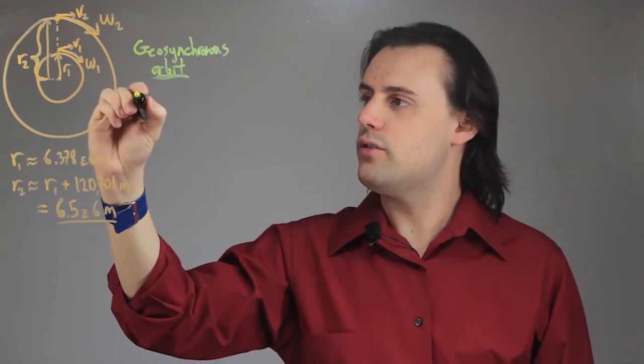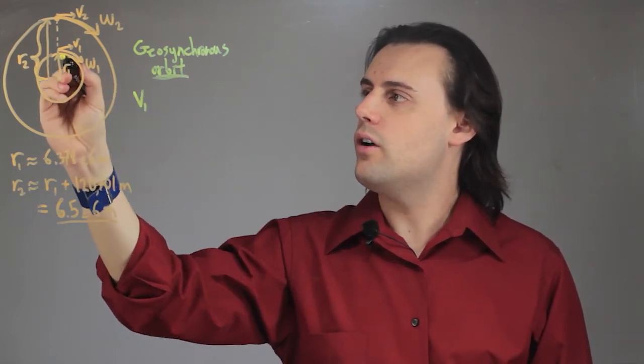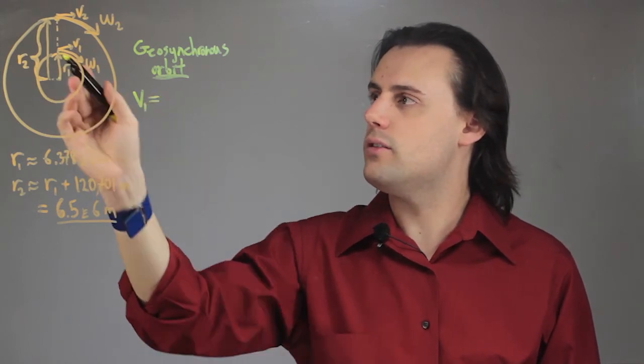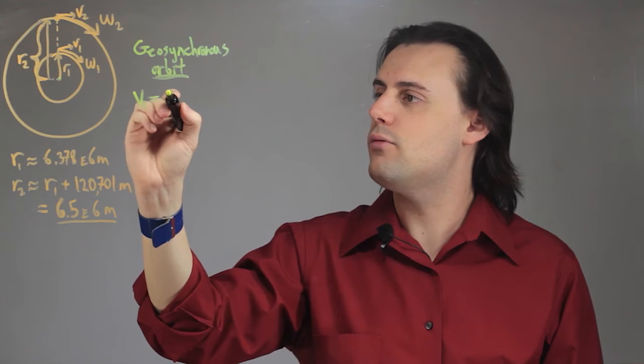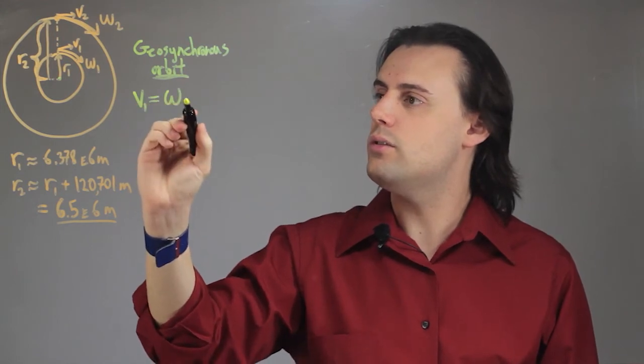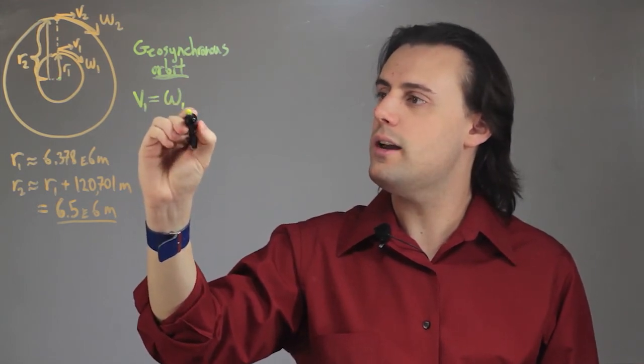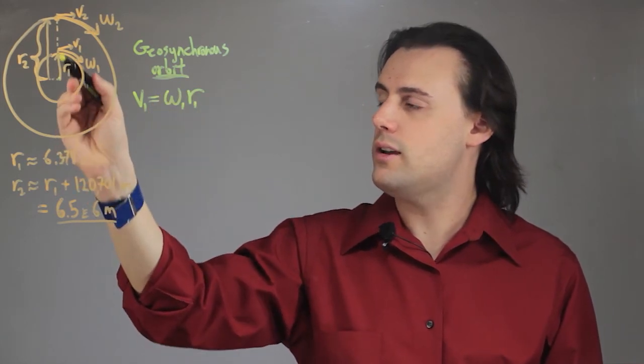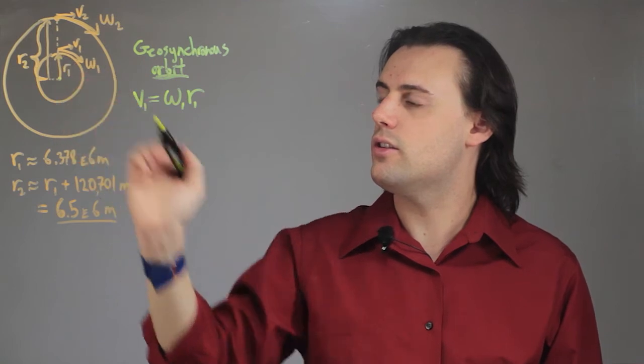So the equations for that, for an object on the surface of the Earth, the velocity of that object on the surface will be equal to the rotational rate of the Earth, omega 1, times r1, which is the distance, the radius of the Earth, the distance from the center to the surface.